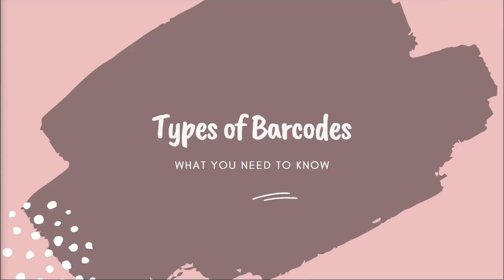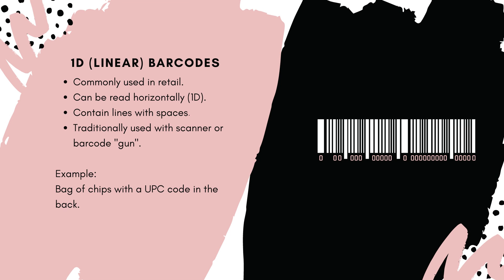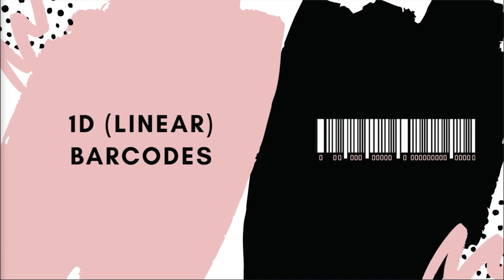There are really two different types of barcodes. The first type are linear barcodes or 1D barcodes, commonly used in retail. They can be read horizontally — which is why they're called 1D, one dimensional — and they contain lines with spaces to encode data. Data is usually text that tells us the product name, maybe the price, or some detail about that specific item. This is traditionally used with a scanner or barcode gun. An example of a 1D barcode would be a UPC code on the back of a bag of chips that you might buy at the grocery store.